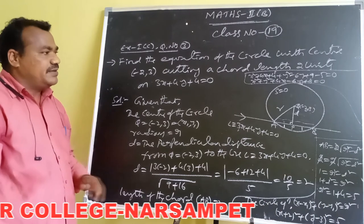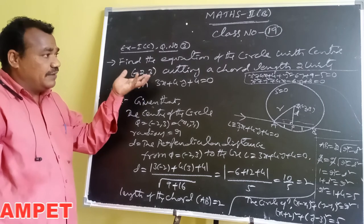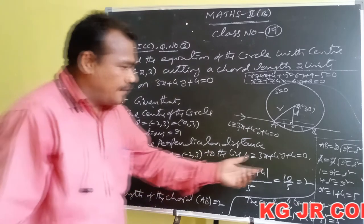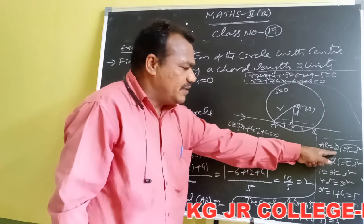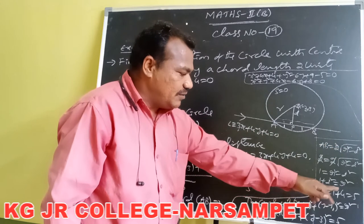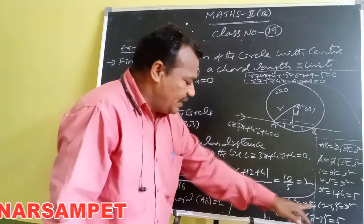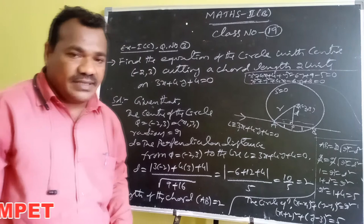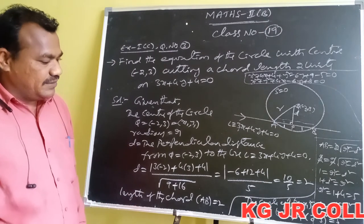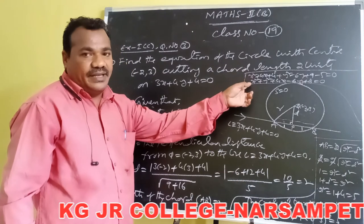In this problem the center coordinates and the length of the chord upon the line are given. Using the formula AB equals 2 into root of r squared minus d squared, we found r squared equals 5. Knowing the center coordinates and radius, we wrote the circle equation in standard form. After simplification this is the required circle equation.